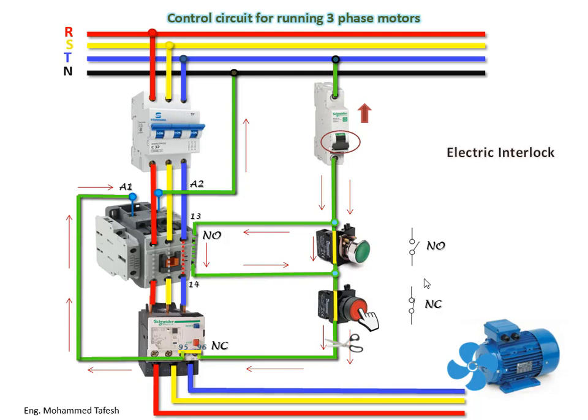An important point: if the electric current exceeds the limit set in the overload — for example, if the full load motor is 16 amperes and the current rises to 18 amperes — the overload device will sense this value and separate contact points 95 and 96 from each other, making them open. In this way, the circuit is disconnected, protecting the motor from overheating caused by excessive current.